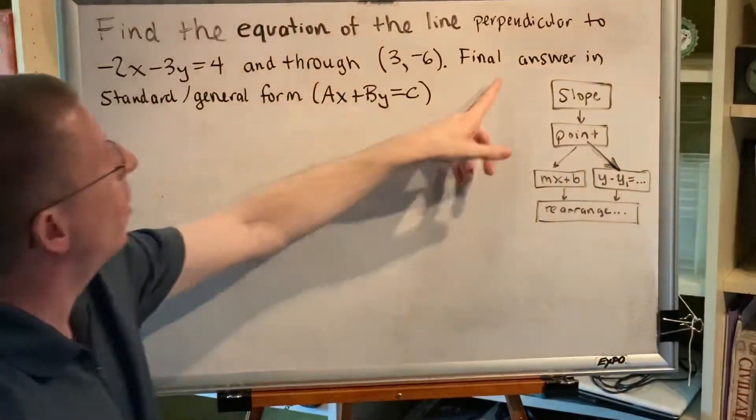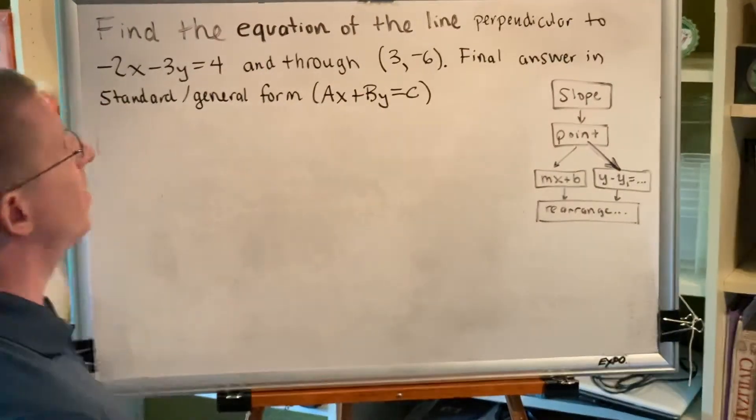So we've been asked to write an equation of a line and we need to go through the flowchart. The first thing we need to find is the slope.